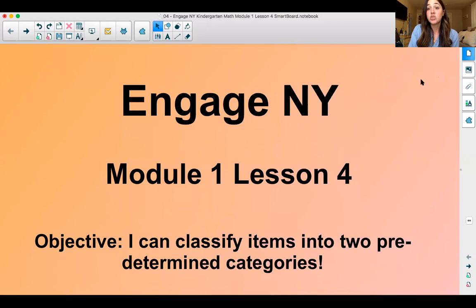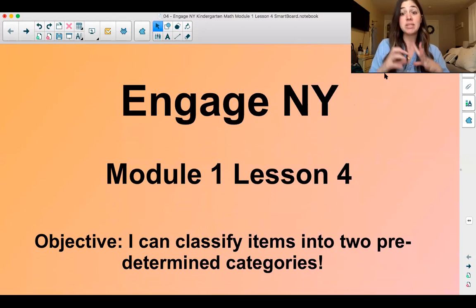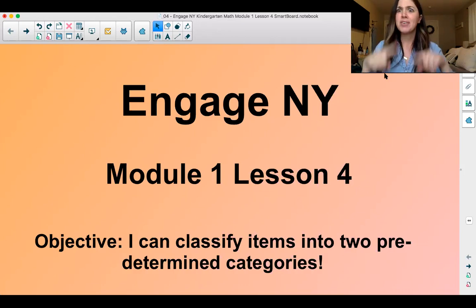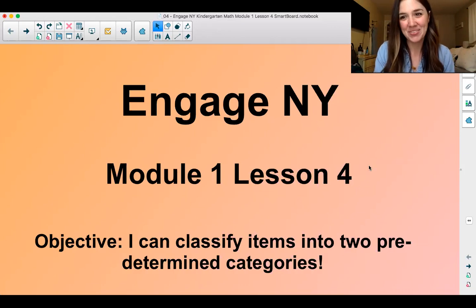Module one, lesson four. So our goal of the lesson, that means what do I want you to have learned? I want you to be able to classify items into two predetermined categories. So in our previous lessons, we kind of sorted things how we wanted to. But today I'm going to give you two categories like big and small and then you're going to sort those things into big or small or different categories that I will tell you. But first, let's start off with warming up.